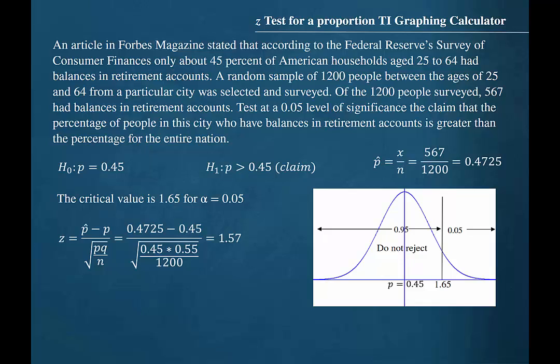In a previous video, we used a table to find the critical value of 1.65 and the formula for the z-score for a proportion to find the z-test value of 1.57 for a hypothesis test about a proportion. We can use the TI graphing calculator to find these values.